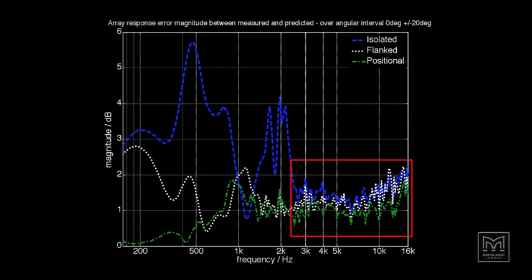Above 3 kHz all data is quite similar, though BEM is slightly more accurate. Above 630 Hz, positional and flanked data are quite similar, with BEM again offering the best results below 630 Hz.